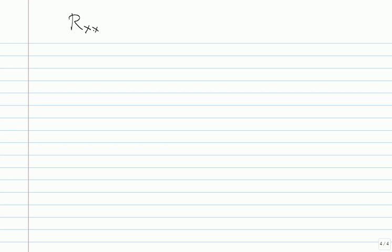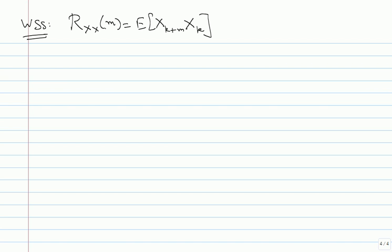Let us redefine the autocorrelation for the WSS case. Since shifts do not matter, you do not need k₁ and k₂ separately - it is enough to have one variable and a shift. So the definition becomes: R_xx(m) = E[x(k+m)·x(k)]. I can write just m on the left-hand side because for a WSS process this quantity is independent of k - it can only depend on m. In the continuous time case, I use τ: R_xx(τ) = E[x(t+τ)·x(t)].